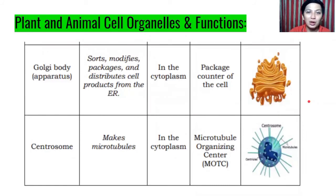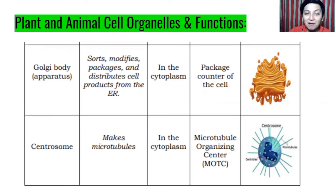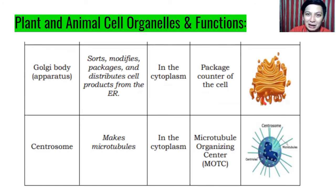Next, we have Golgi body or Golgi apparatus. It sorts, modifies, packages, and distributes cell products from the endoplasmic reticulum. It is inside the cytoplasm. This is what we know as the package counter of the cell — after packaging, products are distributed in small vesicles.